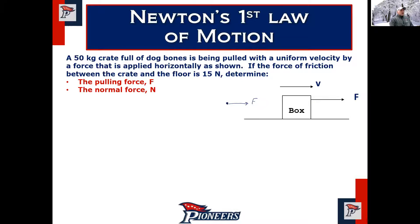Make your force diagram first. You're pulling to the right, so there's an applied force to the right. Gravity acts downward, normal force acts upward. The normal force equals the force of gravity because there's no movement in the y-direction. There's also friction acting to the left — even if they didn't tell you there was friction, knowing there's an applied force to the right and constant velocity means there must be a force to the left to balance it.